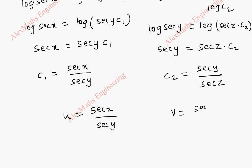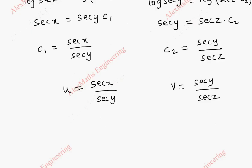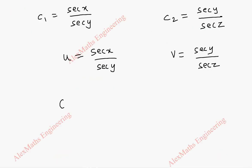v is sec y by sec z. Now our general solution is f of u, v equal to 0.